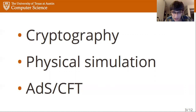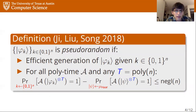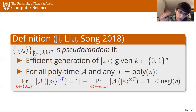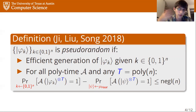I'm now ready to give the definition of pseudorandom states, which were introduced by Ji, Liu, and Song in 2018. We say that a set of states is pseudorandom — keyed by some n-bit string — and there are two requirements. One is that we can efficiently generate these states, meaning there is some polynomial time quantum algorithm where if I give you key k, you can produce copies of phi sub k, one of the states in this ensemble.